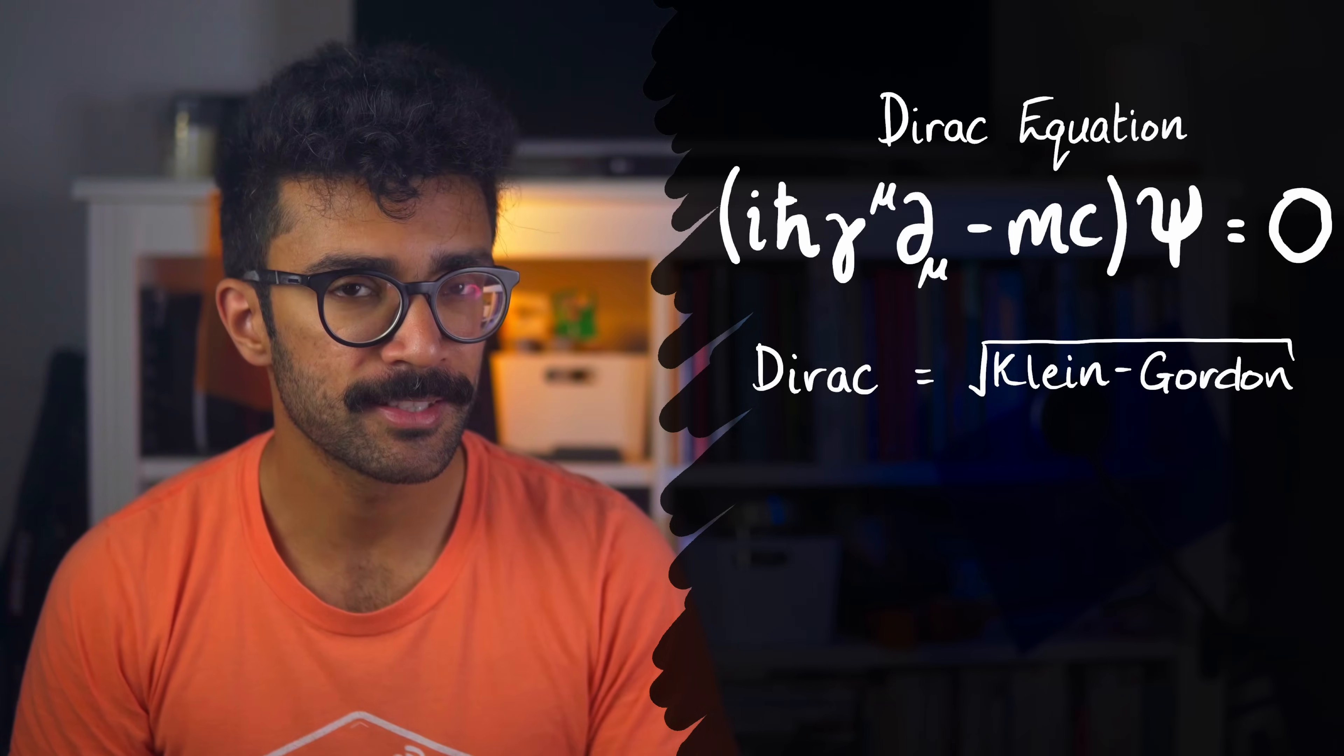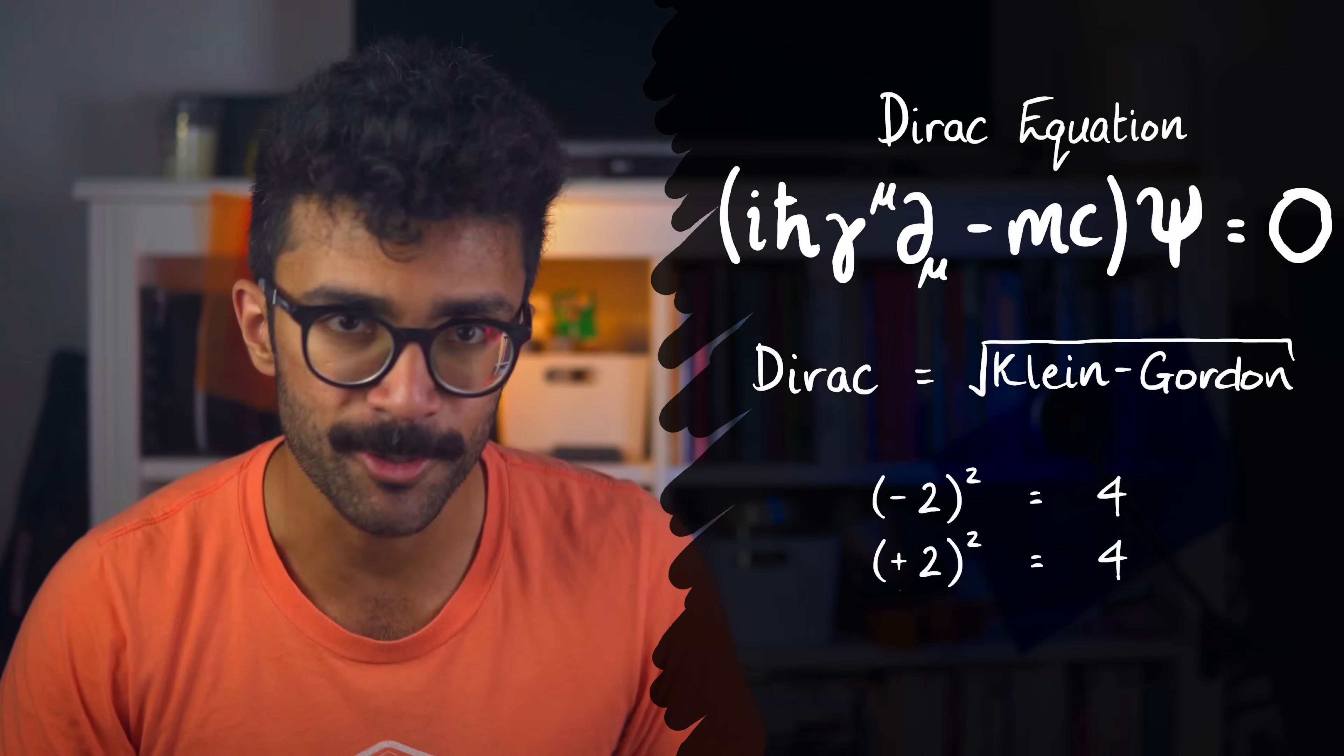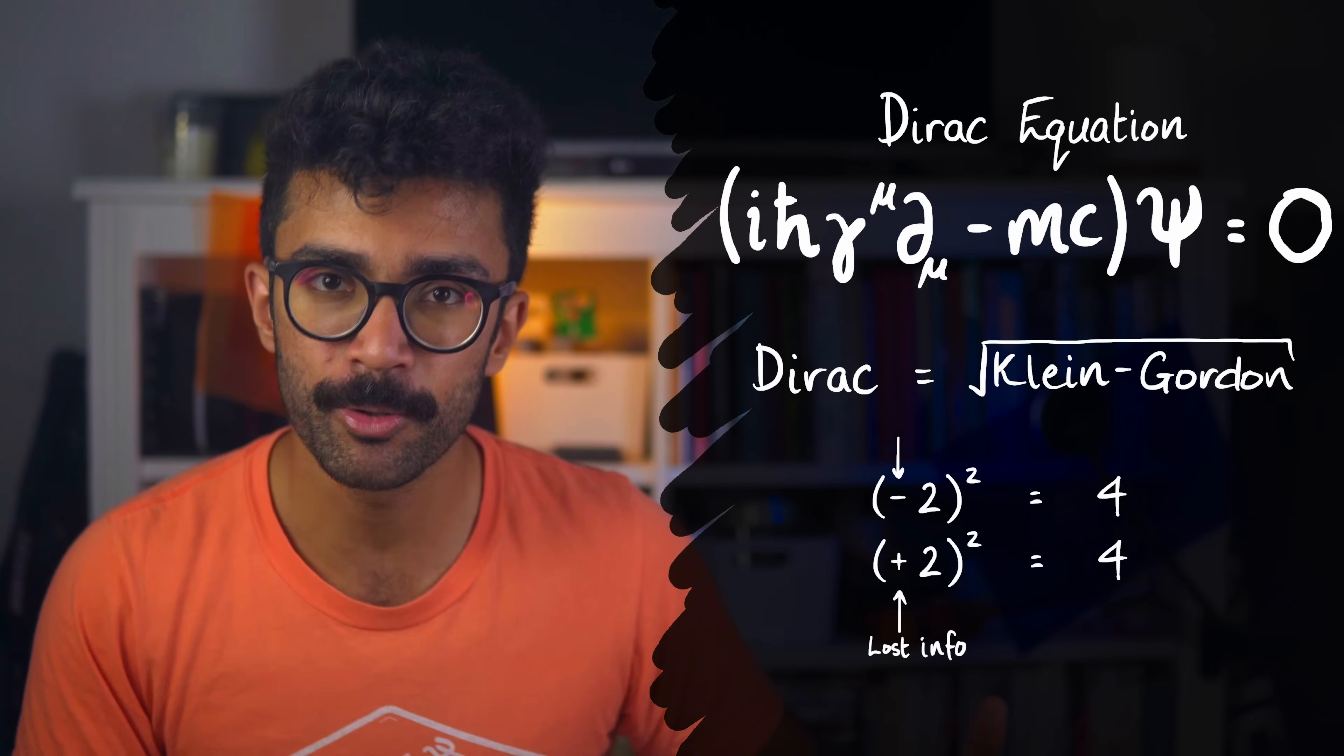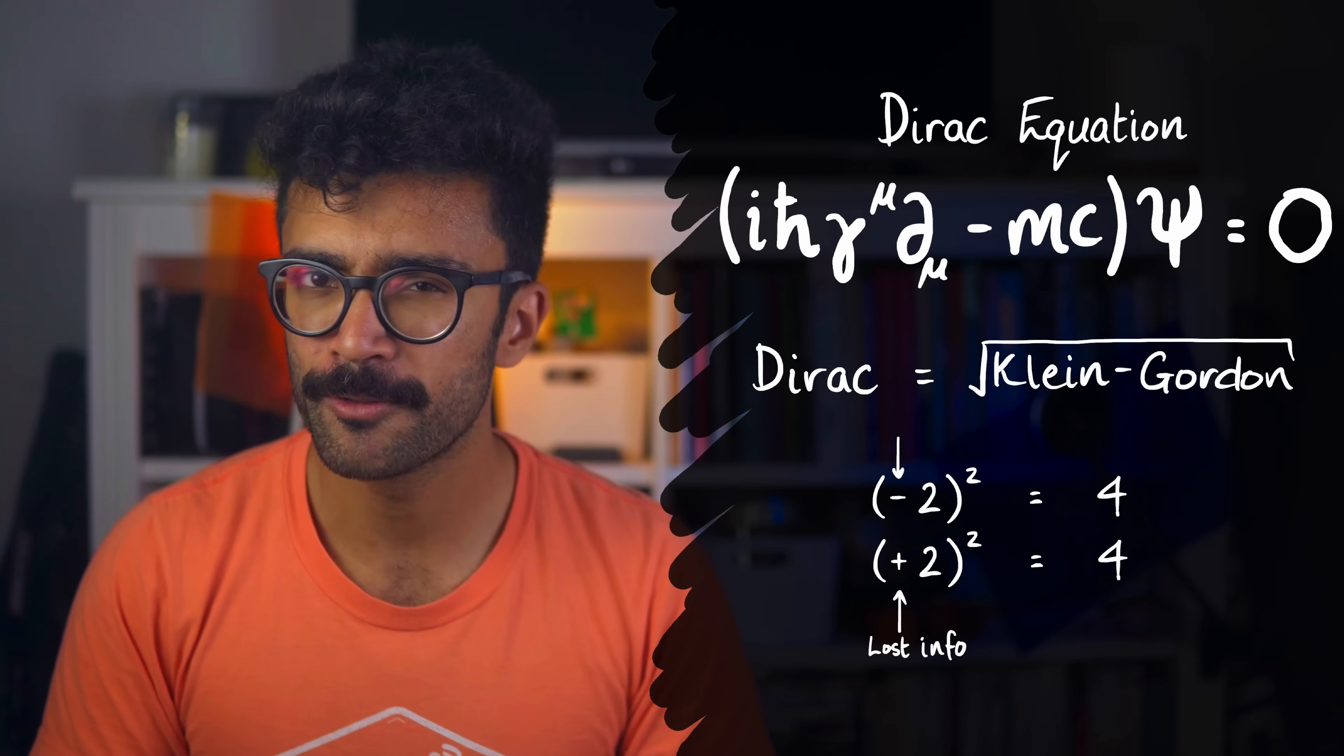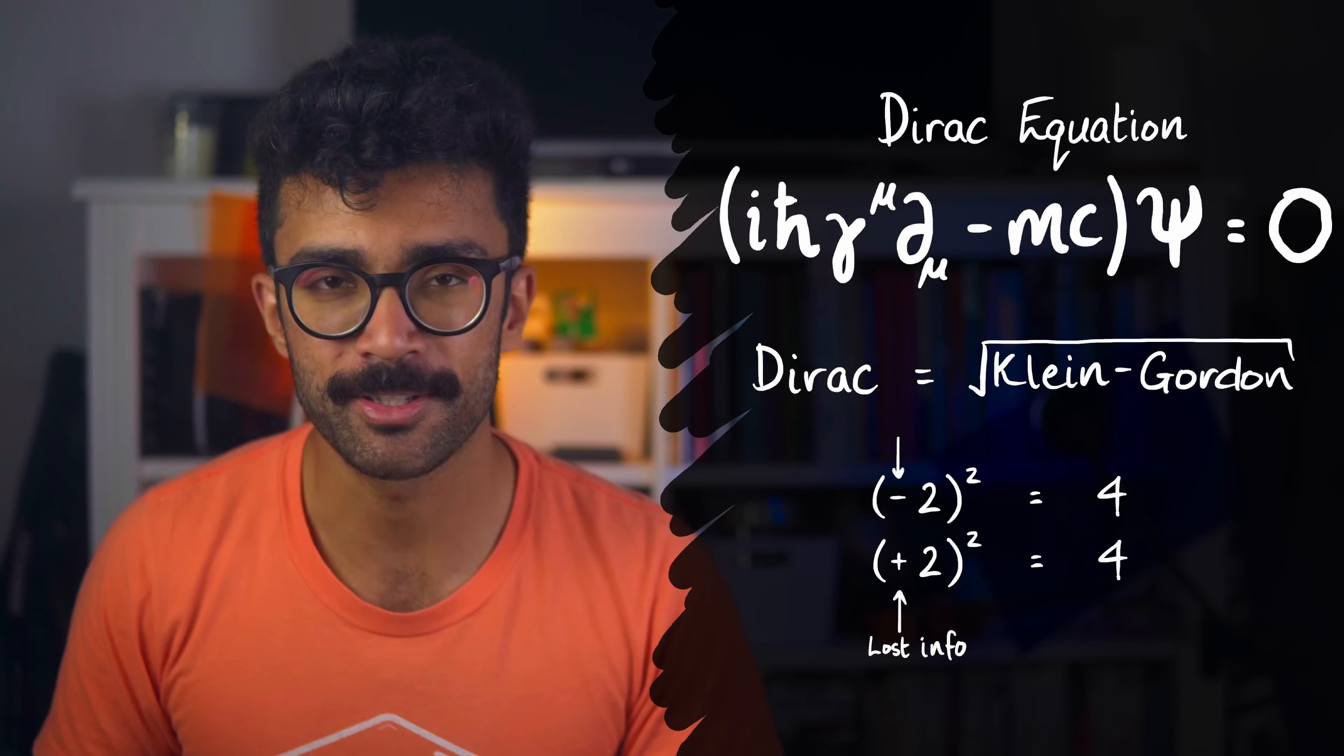Well, the reason that the Klein-Gordon equation doesn't account for spin when the Dirac equation does is because the equivalent of squaring actually loses information. This is in the same way that the square of negative 2 and the square of positive 2 are the same value. The squared version has lost information about what we squared to get to it because both give us the same result, right? So we don't know if we squared minus 2 to get 4 or we squared plus 2 to get 4. We've lost information.